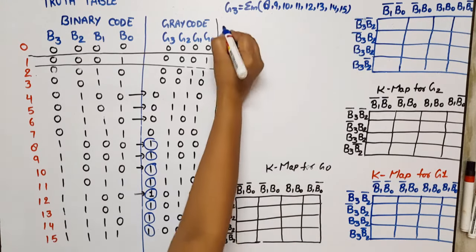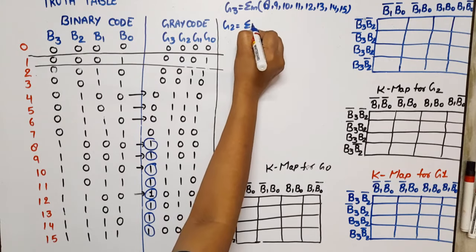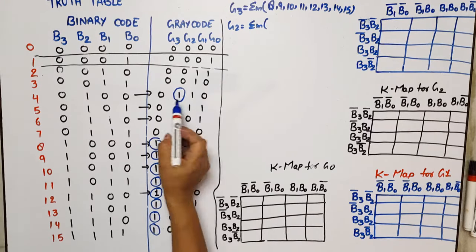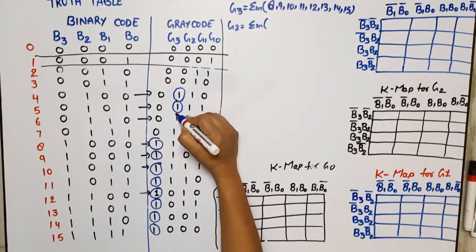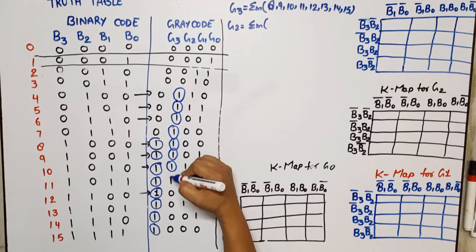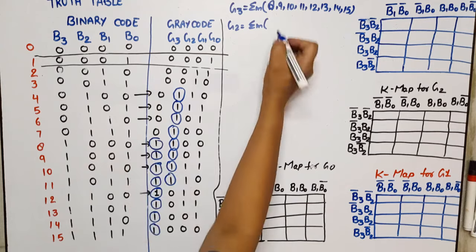For G2, the minterm expression is: G2 = Σm(4, 5, 6, 7, 8, 9, 10, 11), which covers minterms 4 through 11.